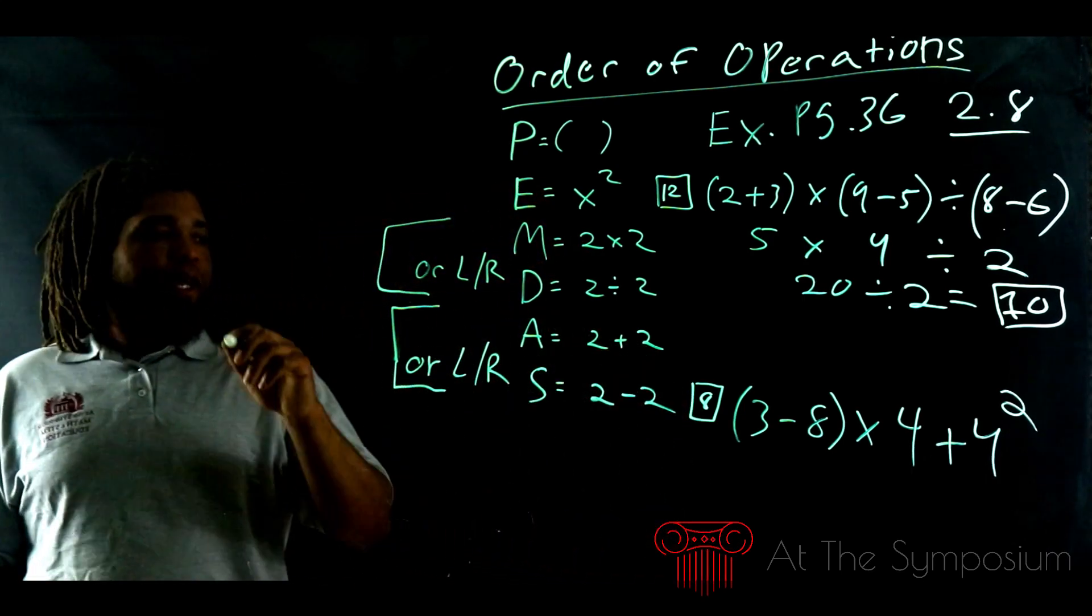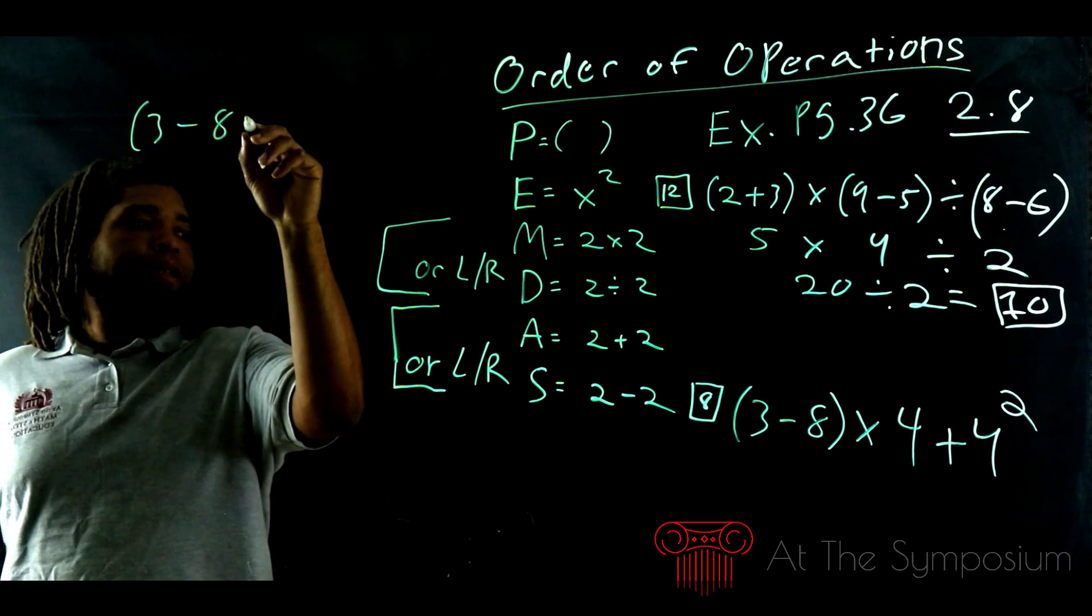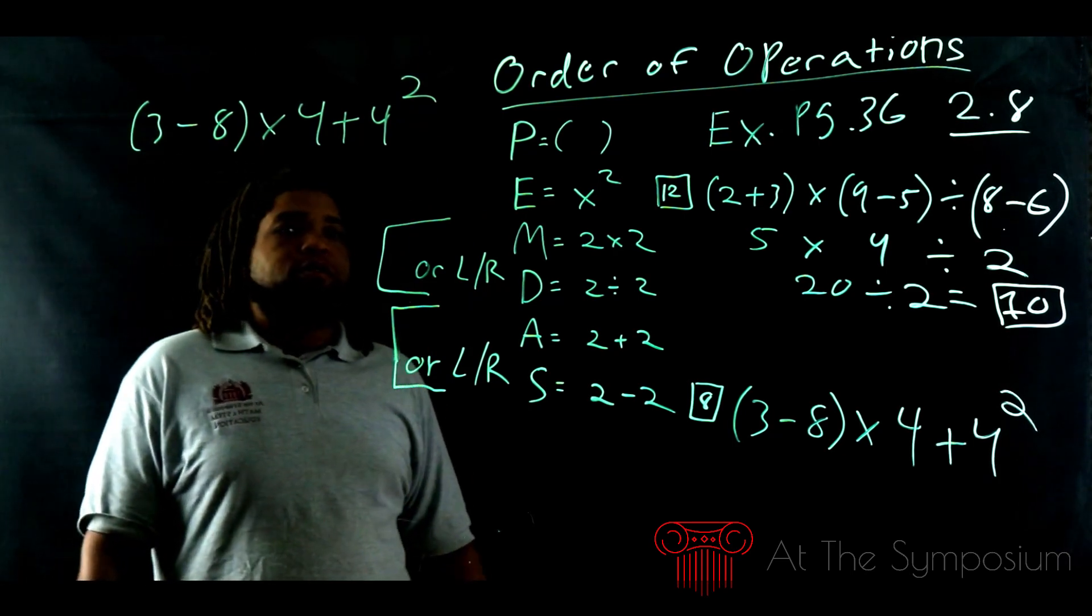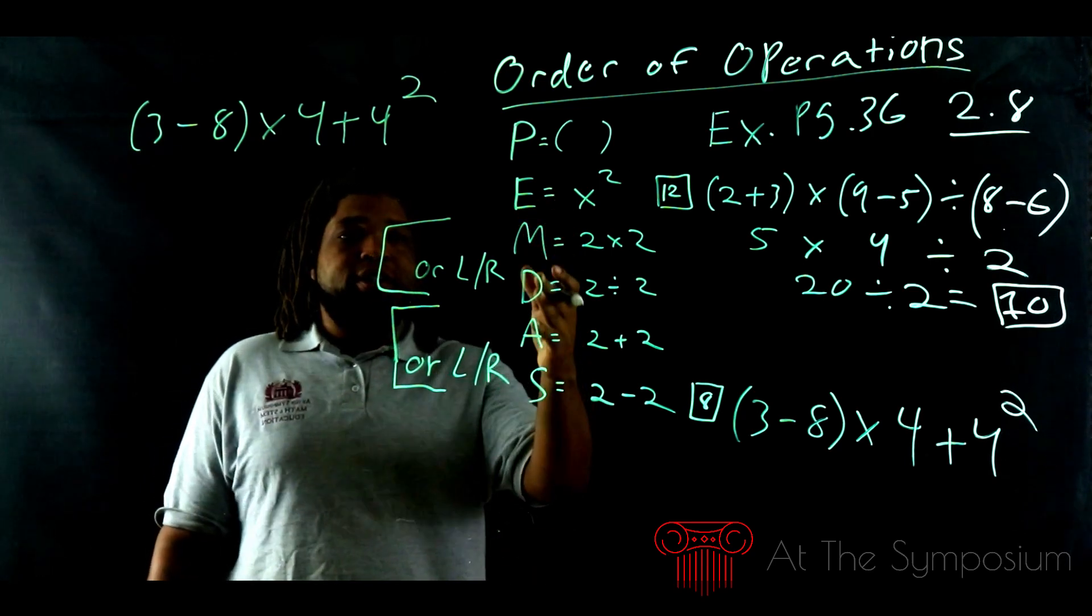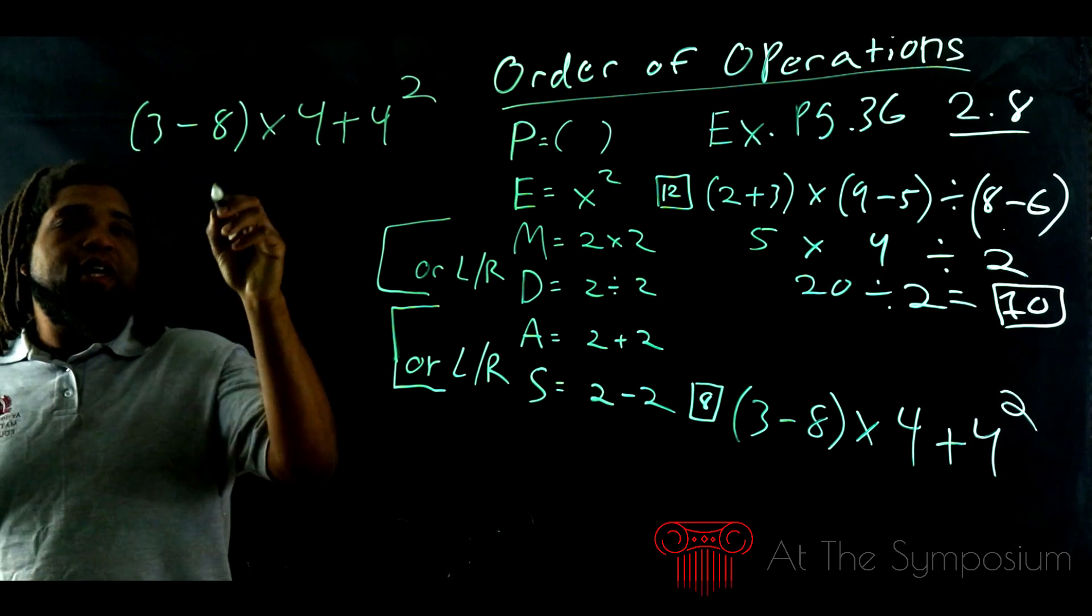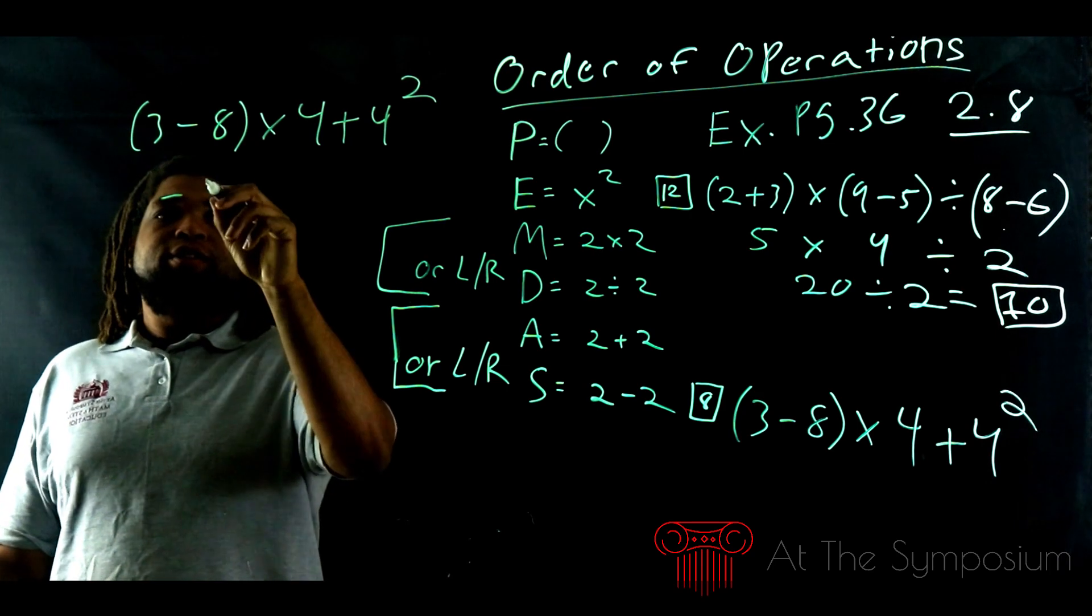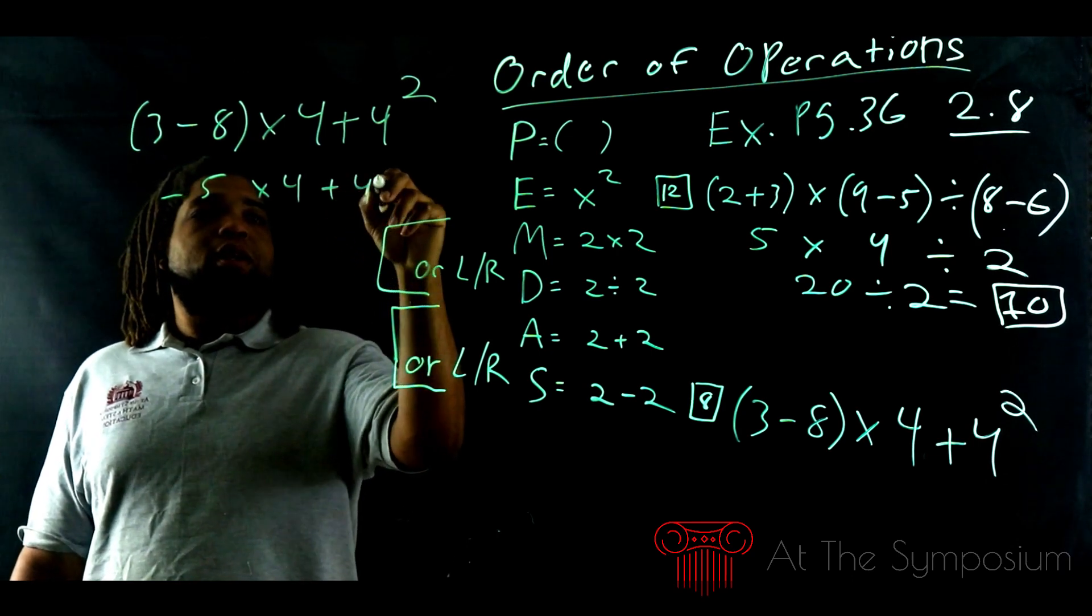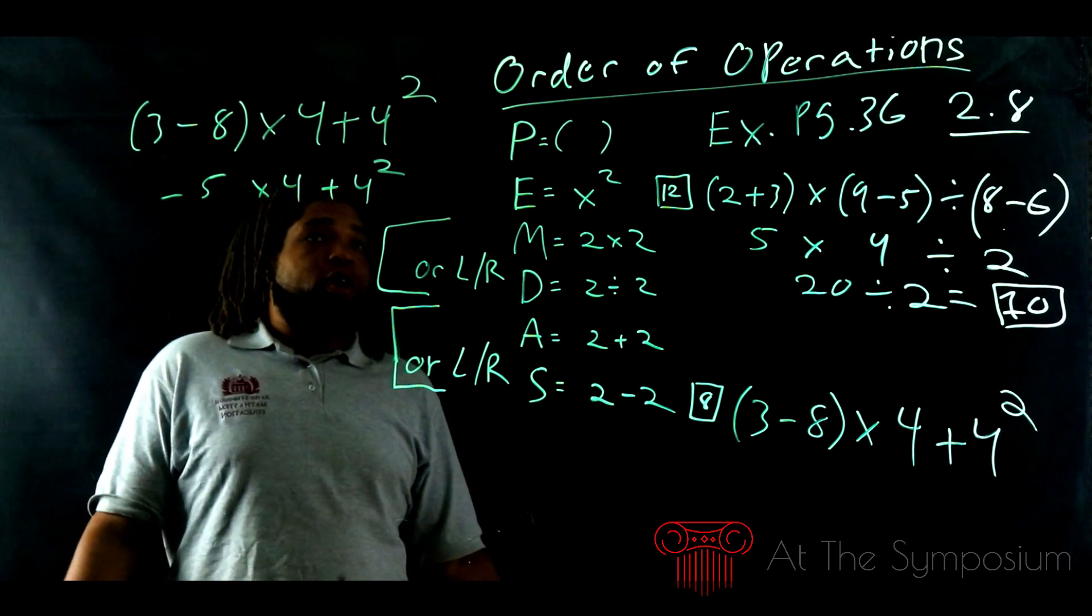For number 8, I'm going to write it over here. Number 8, we have 3 minus 8 times 4 plus 4 squared. If we look at our series, what do we do? We do parentheses first. So 3 minus 8. Remember, when we're subtracting by a number that's smaller, it's going to leave us a negative. So that's going to give us negative 5. Negative 5 times 4 plus 4 to the second. Now we do our exponent.